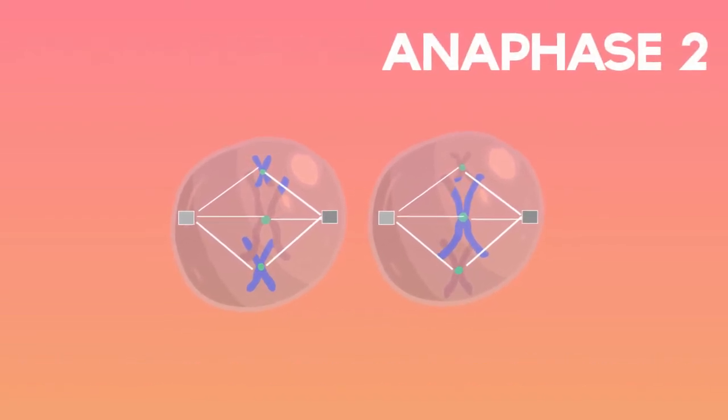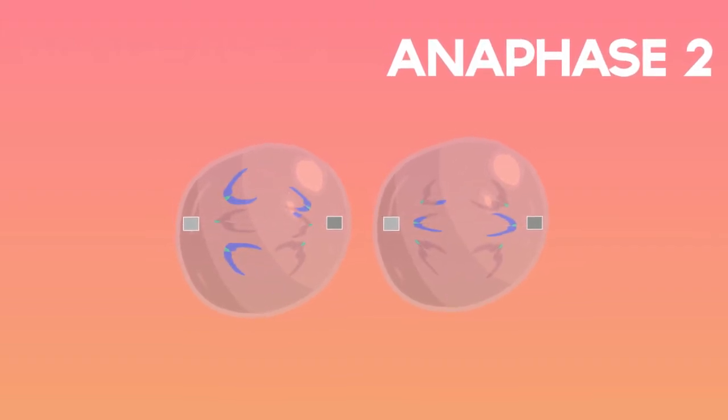In anaphase II, the sister chromatids divide and move to opposite poles of the cells. This is also considered a vital part of meiosis.